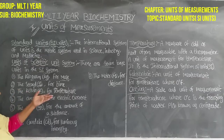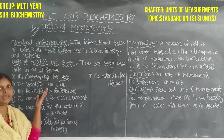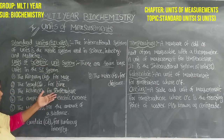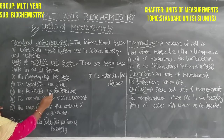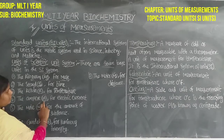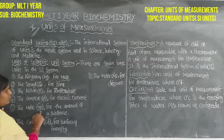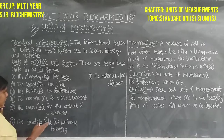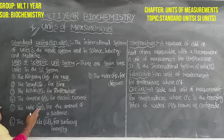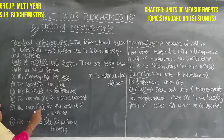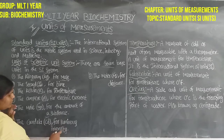Then next is Kelvin — abbreviation K — for temperature. Then next is Ampere — abbreviation A — for electrical current. Then next is Mole — abbreviation MOL — for amount of substances.